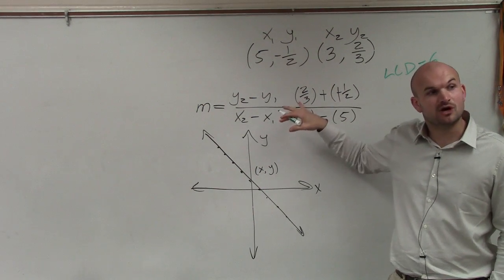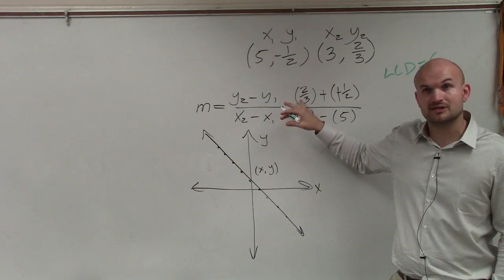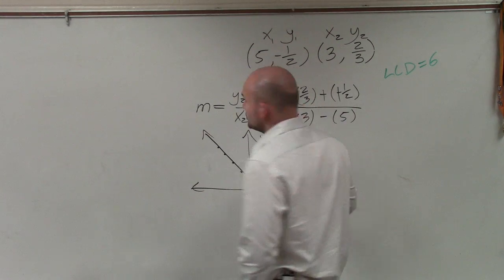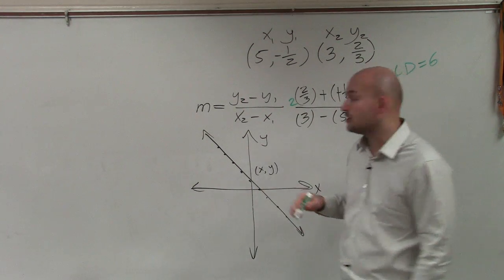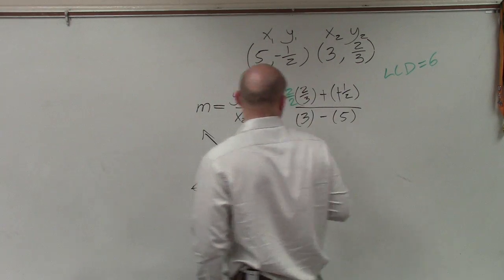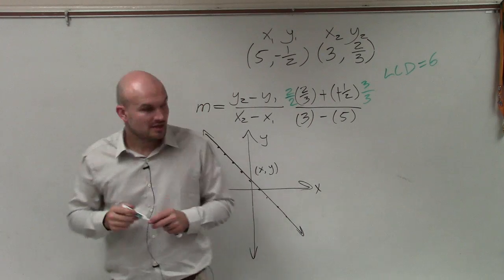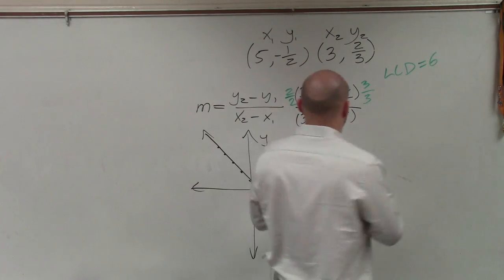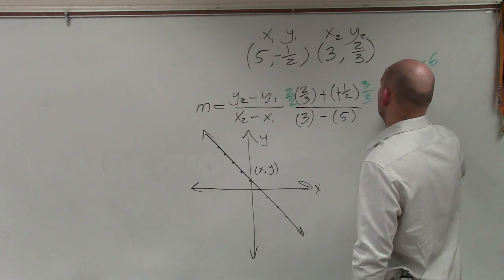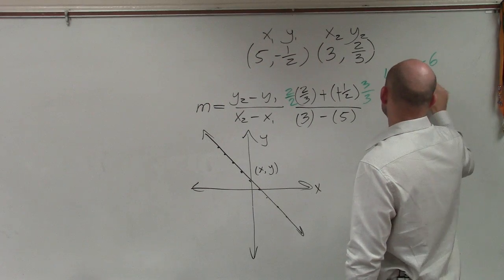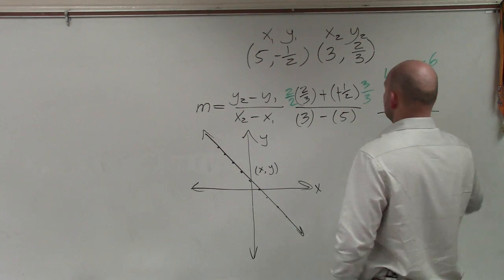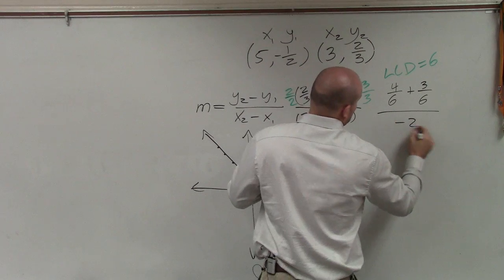So therefore, I need to determine what do I need to multiply 3 by, which is in my denominator, to get it to be 6, which would be 2. To produce equivalent fractions, I multiply by 2 over 2. And then here, I'll do the same thing, but I'll use 3. So now, I represent that as 4 over 6 plus 3 over 6 divided by 3 minus 5 is negative 2.